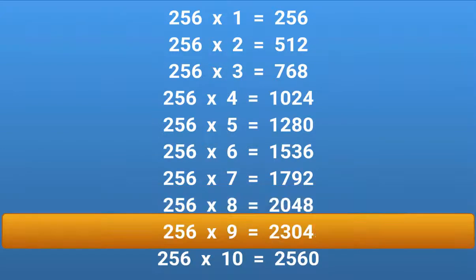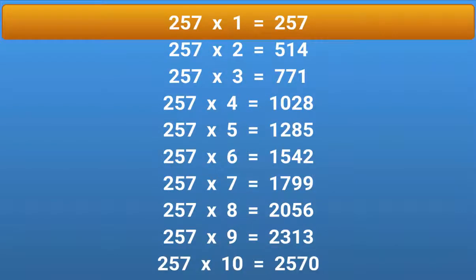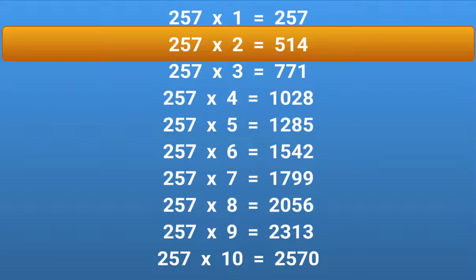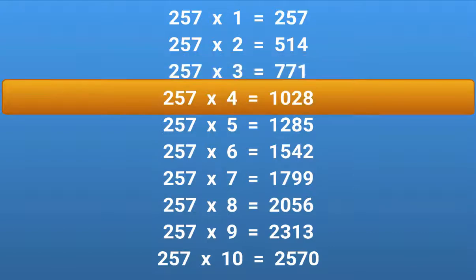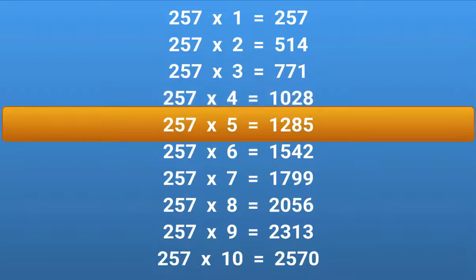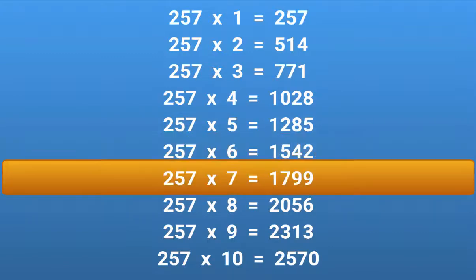256 × 10 = 2560. 257 × 1 = 257. 257 × 2 = 514. 257 × 3 = 771. 257 × 4 = 1028. 257 × 5 = 1285. 257 × 6 = 1542. 257 × 7 = 1799. 257 × 8 = 2056. 257 × 9 = 2313.